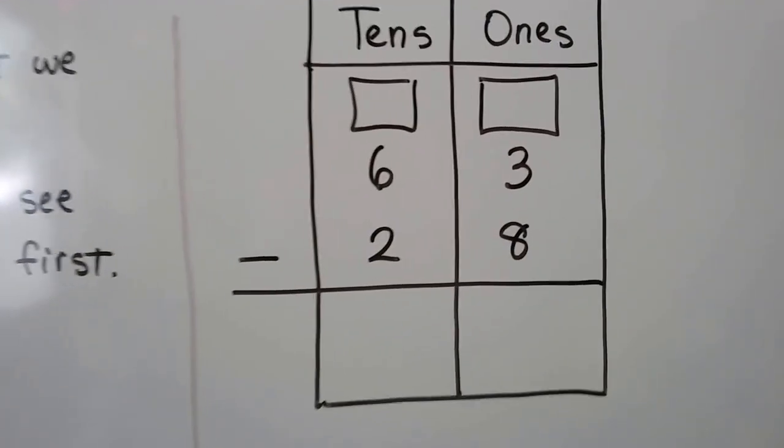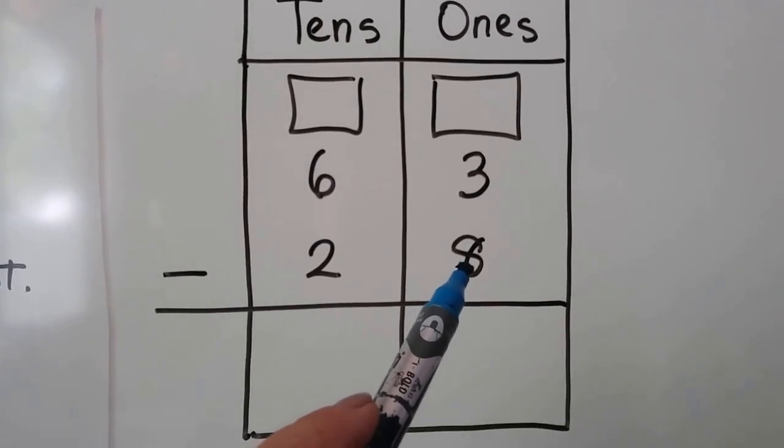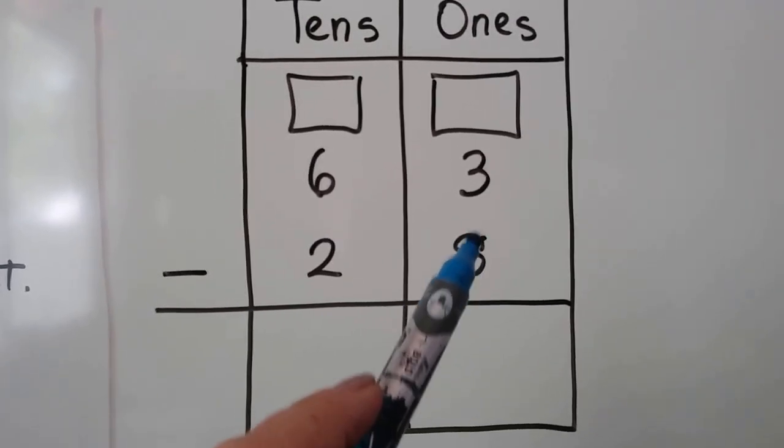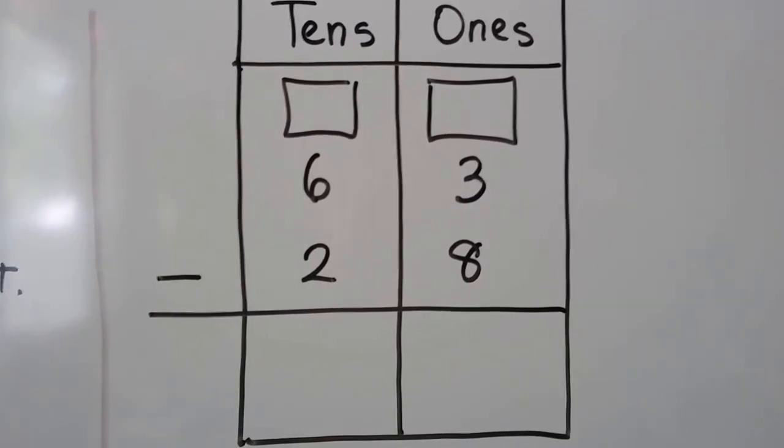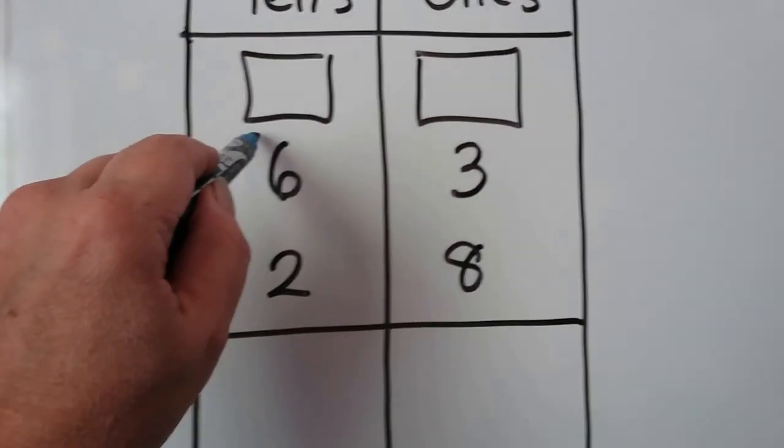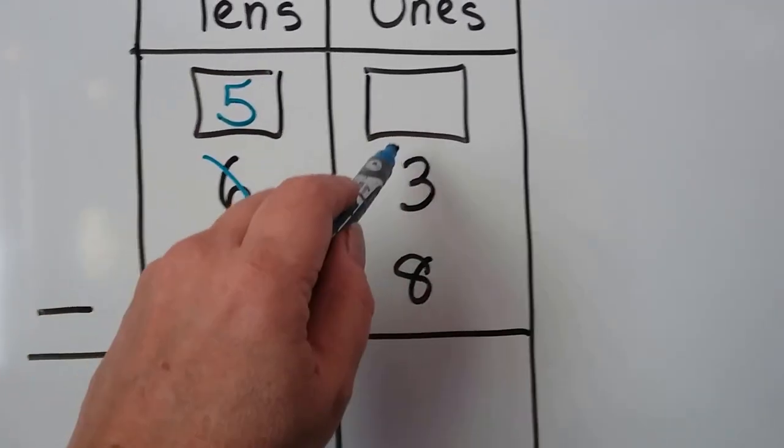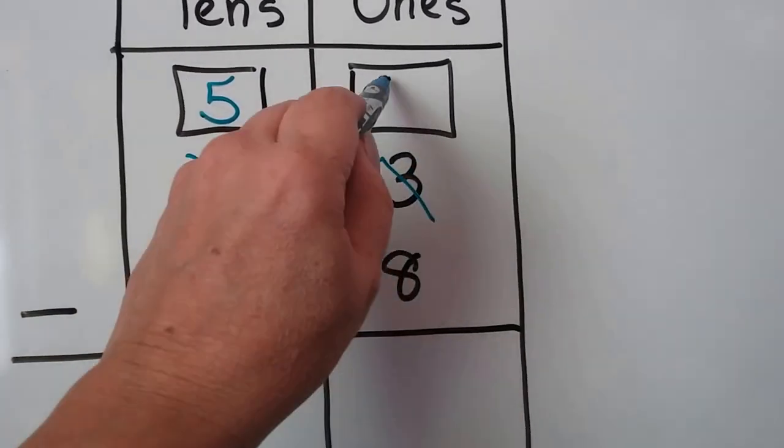Here we have 63 minus 28. We look at the ones place and see that the 8 in the subtrahend is larger than the ones in the minuend, so we need to regroup. We cross off the 6. It becomes a 5.